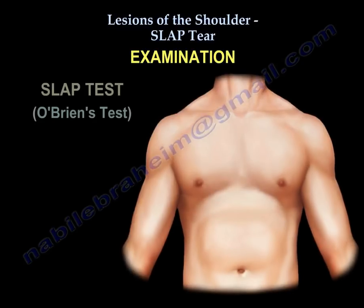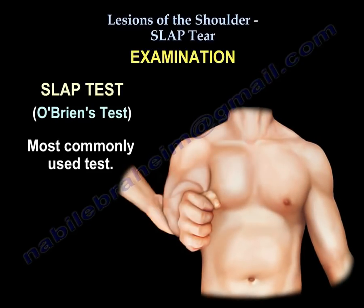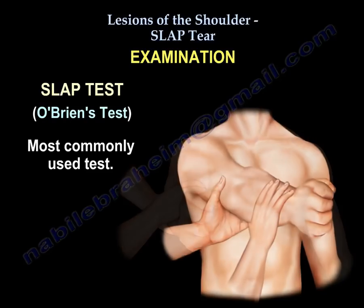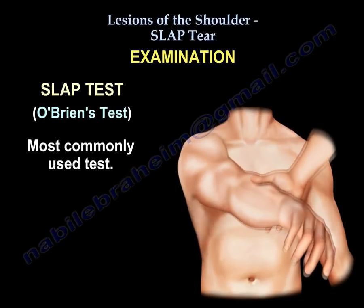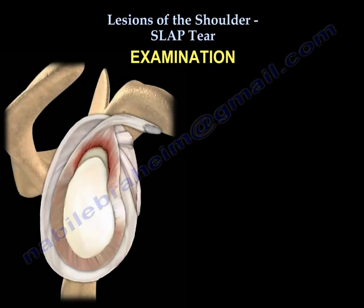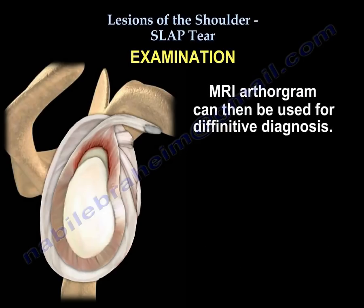On examination, the O'Brien test is the most commonly used test. There are many other tests that can be used. The more positive the tests, the more you confirm a SLAP tear is present, and then you can proceed to MRI arthrogram for the definitive diagnosis.